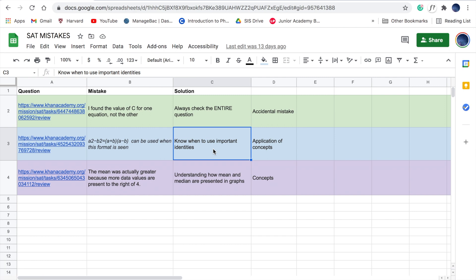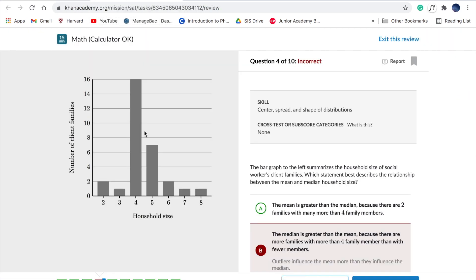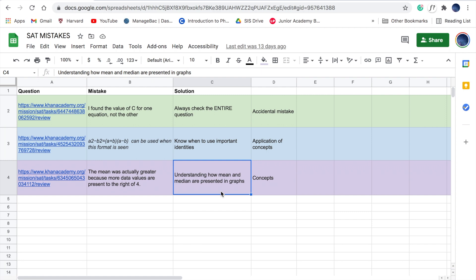This will help me remember this for future questions that might be similar. The purple color code is for concepts that I don't fully understand. For example, in this question, I knew that the median would be around 4, but what I didn't realize is that the mean has to be greater than the median, because there are more bars to the right side of 4 than there are to the left side. My solution to this is to go back to Khan Academy and review the videos on mean and median, especially in relation to graphs, because I understood that I was having trouble reading graphs related to this concept.